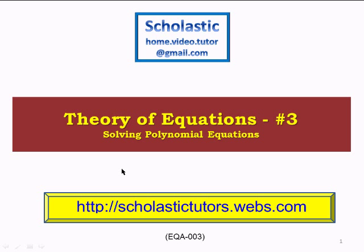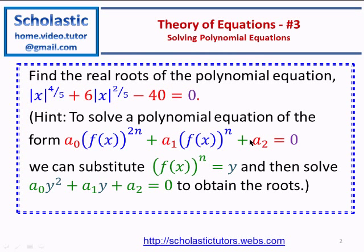Welcome back. Theory of equations — solving polynomial equations. Here's the question: Find the real root of the polynomial equation modulus x to the power 4 over 5, plus 6 times modulus x to the power 2 over 5, minus 40, equal to 0. A hint is given.